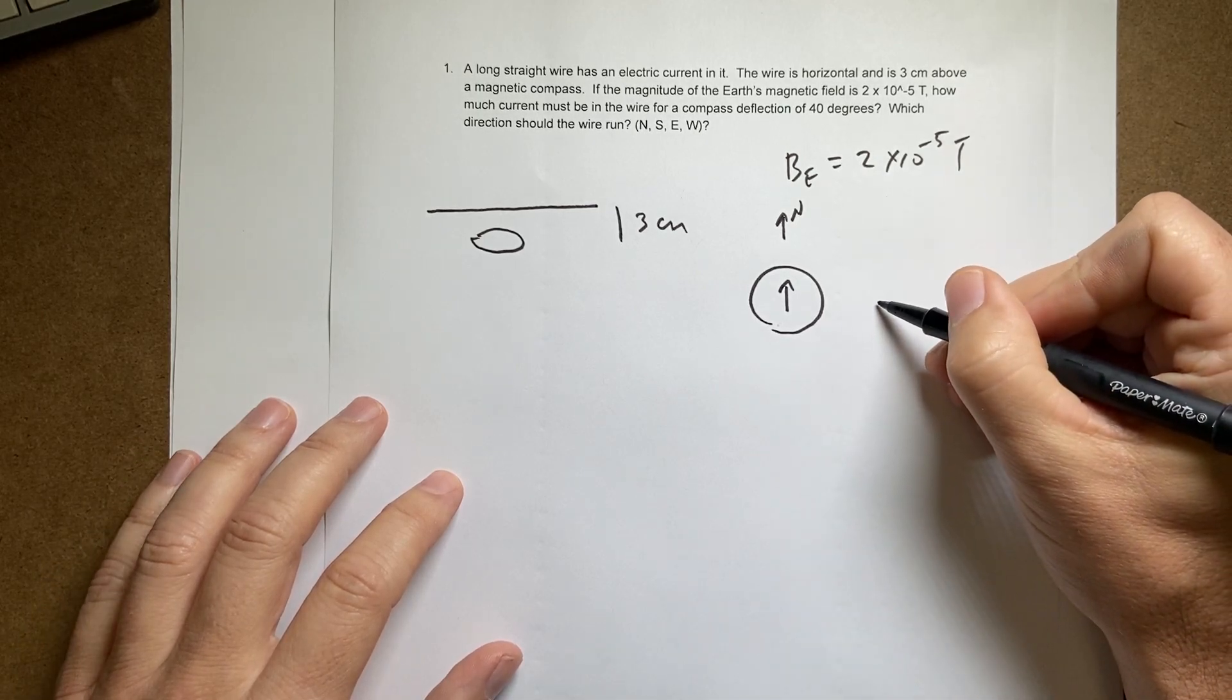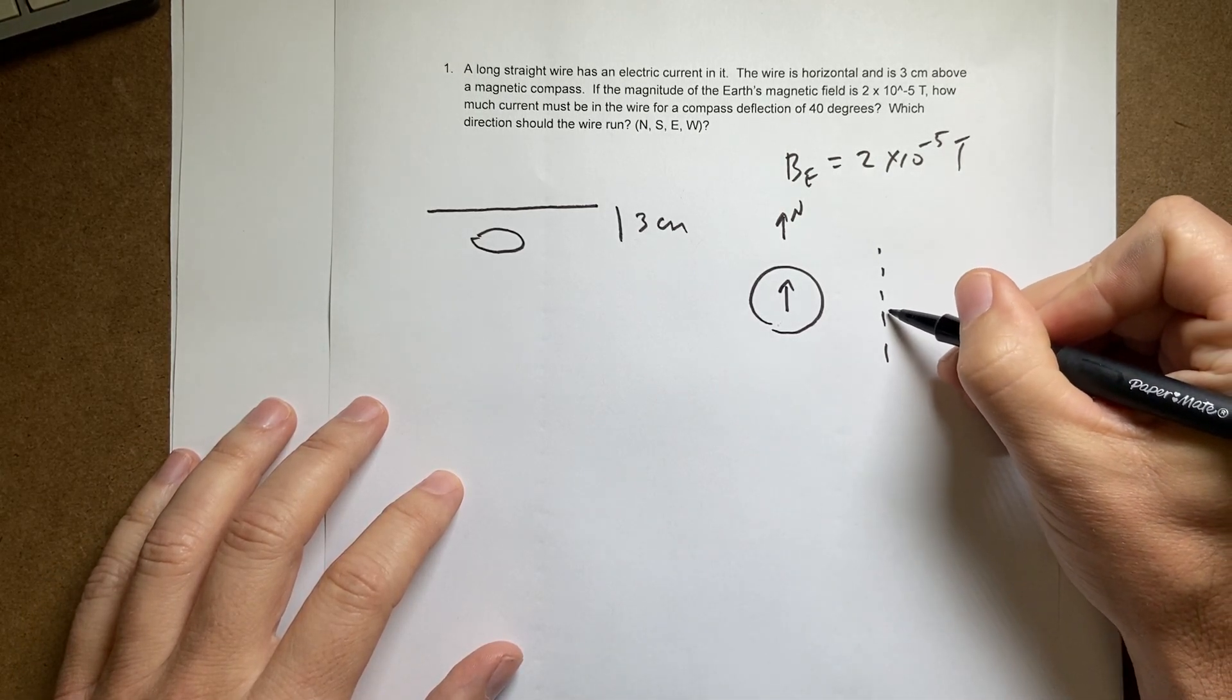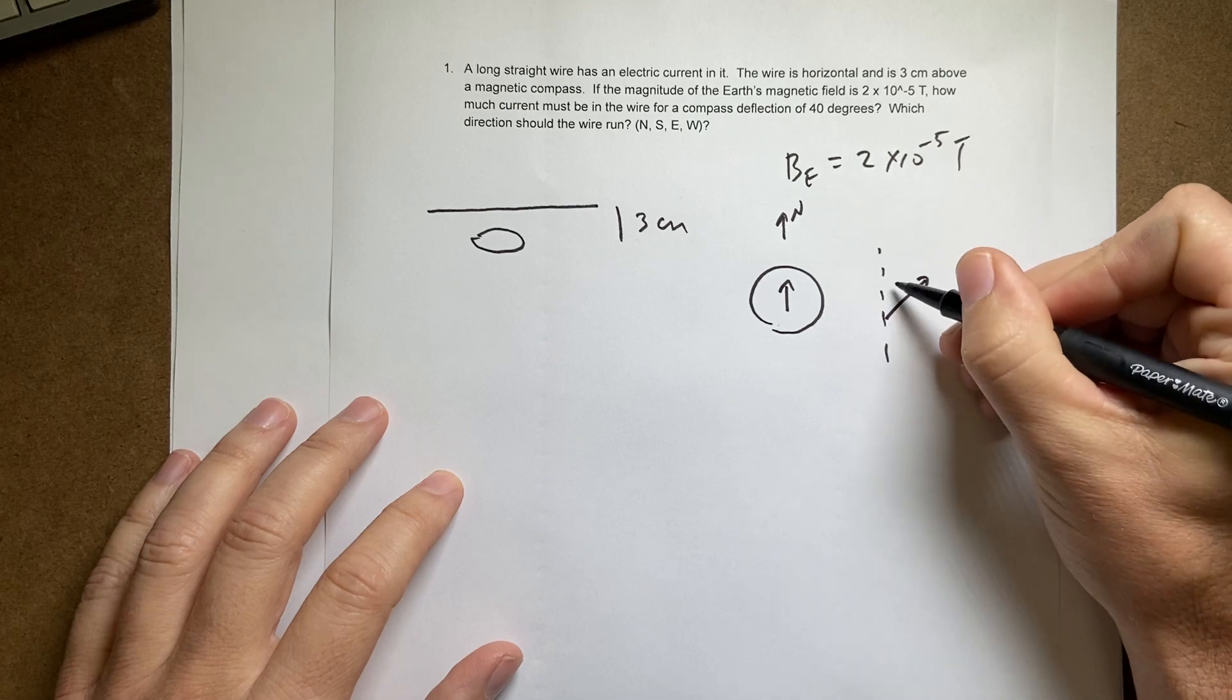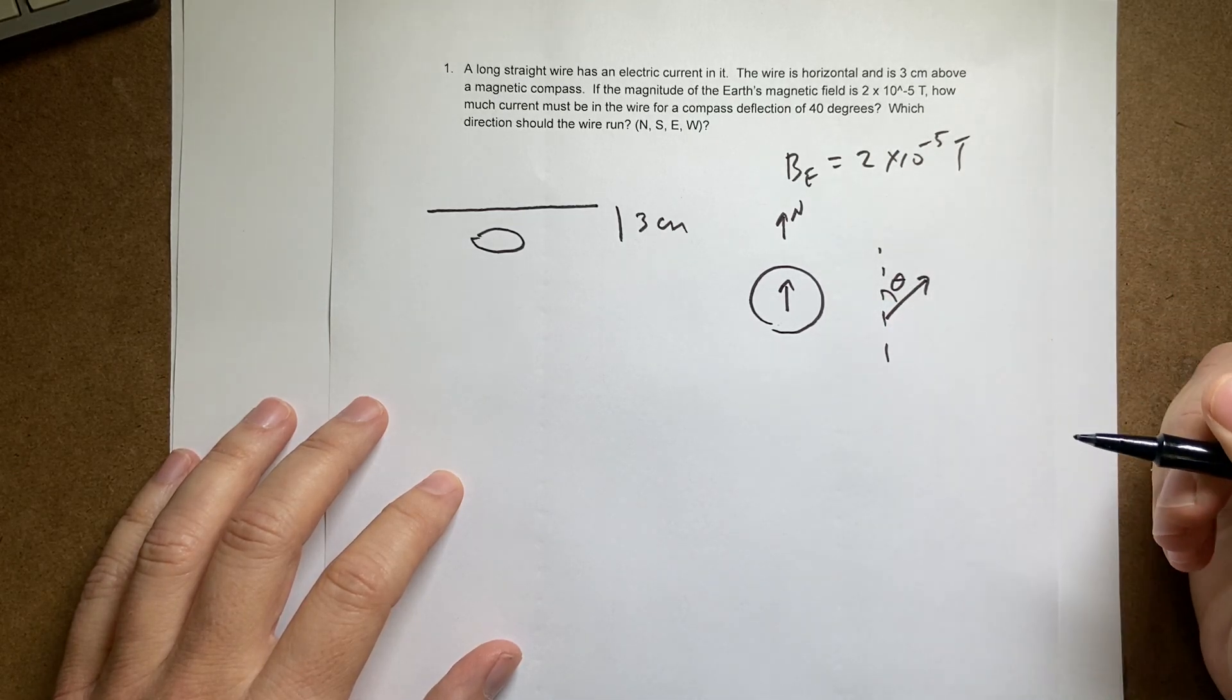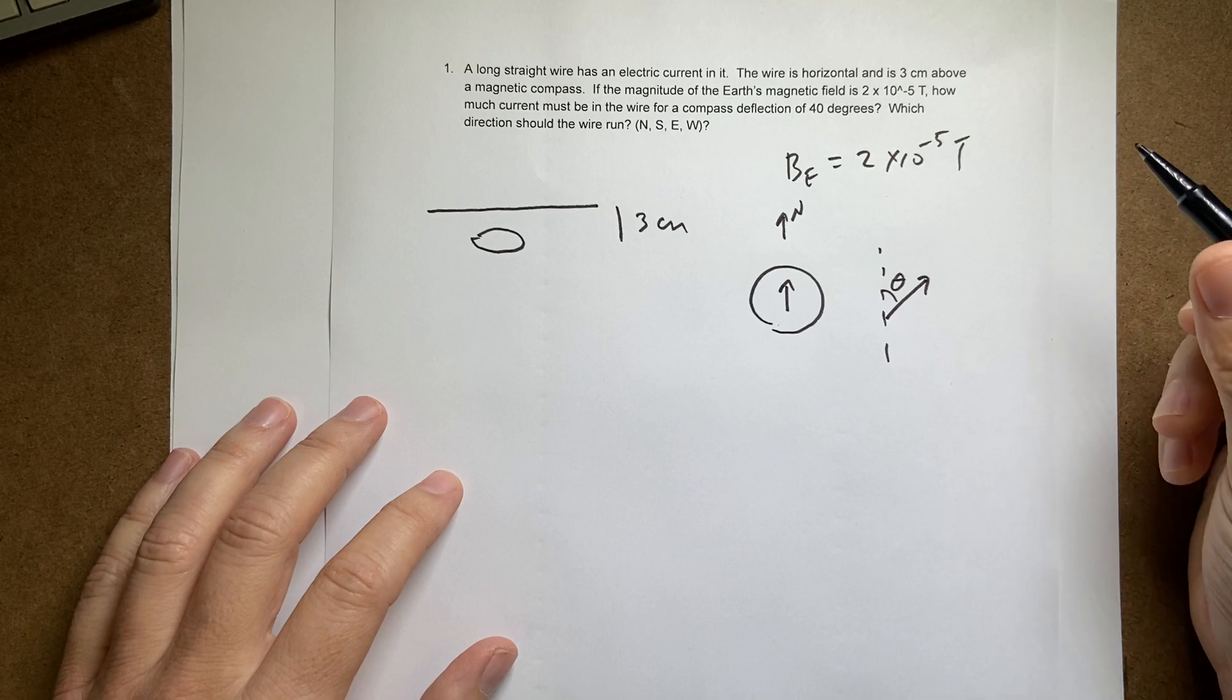Okay. So what if I want the needle to do this? That's north. And I want the needle to be pointing this way. And that angle is 40 degrees. That's the question. So how do I get that to happen?